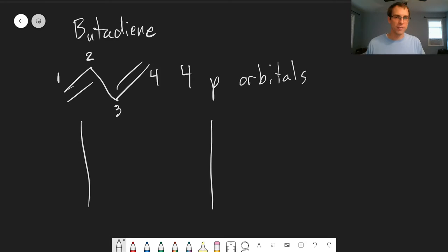So I'd like you to pause. If you need to go back to the previous video to remember all the assumptions that we're going to use, and what is the secular determinant in terms of alphas and betas. So pause, see if you can write this out on your own.